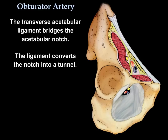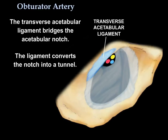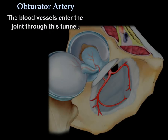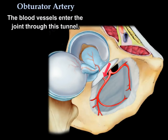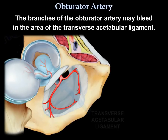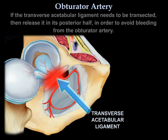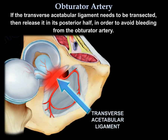The transverse acetabular ligament bridges the acetabular notch, converting the notch into a tunnel through which blood vessels enter the joint. Branches of the obturator artery may bleed in the area of the transverse acetabular ligament. If the transverse acetabular ligament needs to be transected, release it in the posterior half in order to avoid bleeding from the obturator artery.